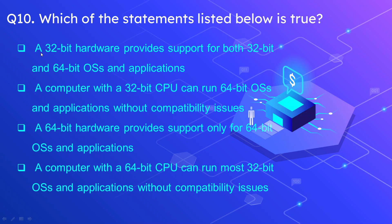Question number 10: which of the statements listed below is true? Option 1: a 32-bit hardware provides support for 32-bit and 64-bit OS and applications. Option 2: a computer with a 32-bit CPU can run 64-bit operating system and applications without compatibility issues. Option 3: a 64-bit hardware provides support only for 64-bit OS and applications. Option 4: a computer with a 64-bit CPU can run most 32-bit OS and applications without compatibility issues. The correct answer is option 4.